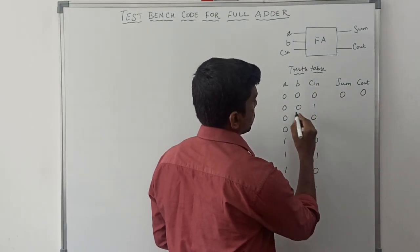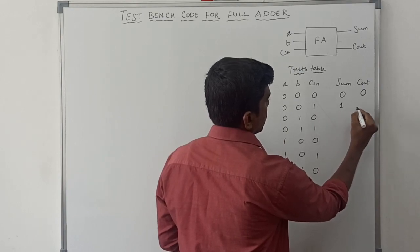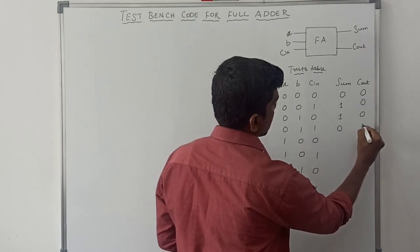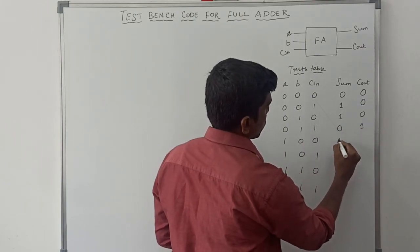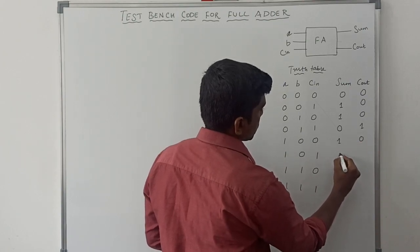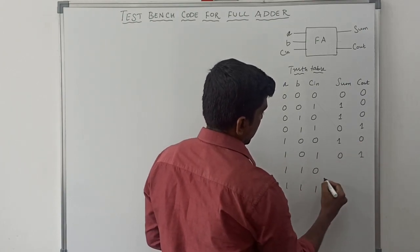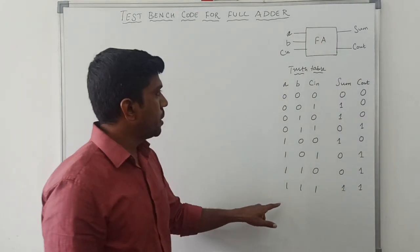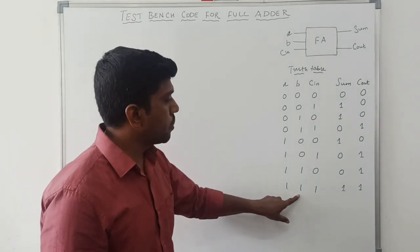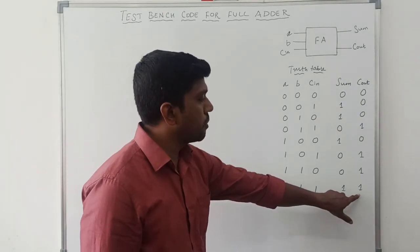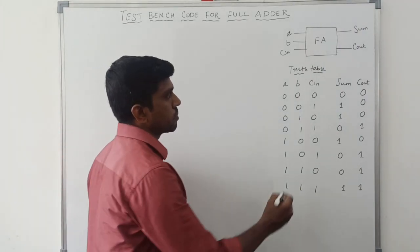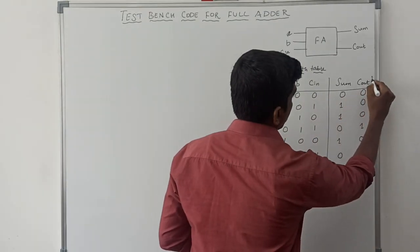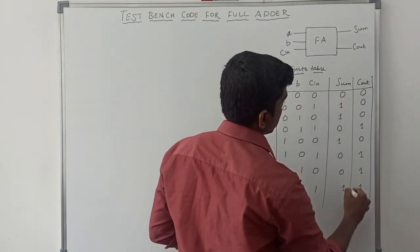The output values from the truth table: sum is 0, carry 0; sum 1, carry 0; sum 1, carry 0; sum 1, carry 0; sum 0, carry 1; sum 1, carry 1. When all three bits are 1, the sum value is 1 and carry value is also 1. That is the truth table of the full adder circuit.